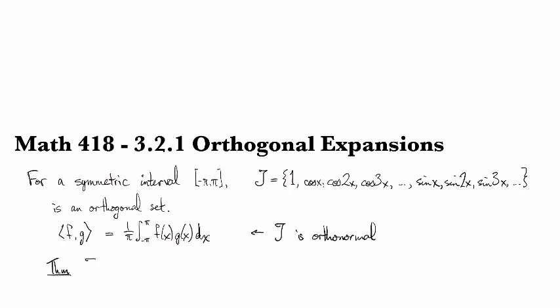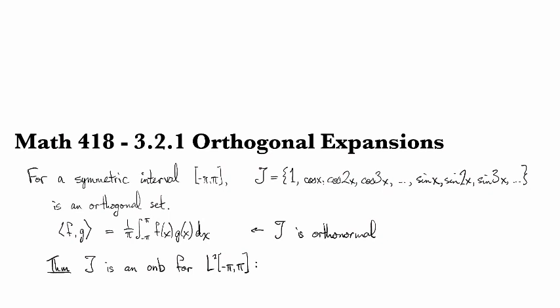So script T is an orthonormal basis, and as a basis for the vector space L2 minus pi to pi.